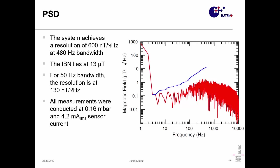If we consider a smaller bandwidth of 50 hertz, which is enough for most applications, we would be at 130 nanotesla per square root hertz, which is near the state-of-the-art resolution. All measurements were conducted at 0.16 millibar and at 4.2 milliampere RMS sensor current.